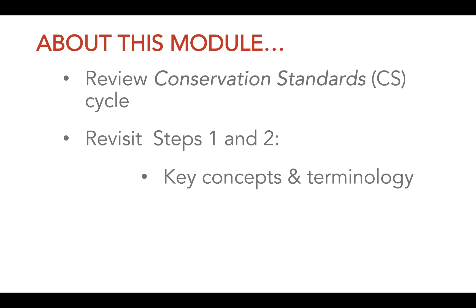As part of that, we'll revisit the products and outputs of the first two steps, including conservation targets, viability analysis, direct threats and ratings, situation models, and strategic plan components. These components include results chains, activities, goals, objectives, and a monitoring plan.